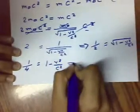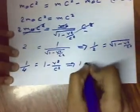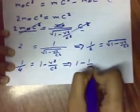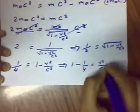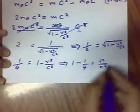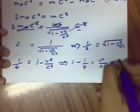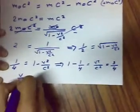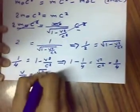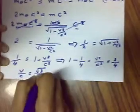And 1 minus v squared over c squared equals one quarter. So v squared over c squared equals 3 over 4, and v over c equals square root of 3 over 2.